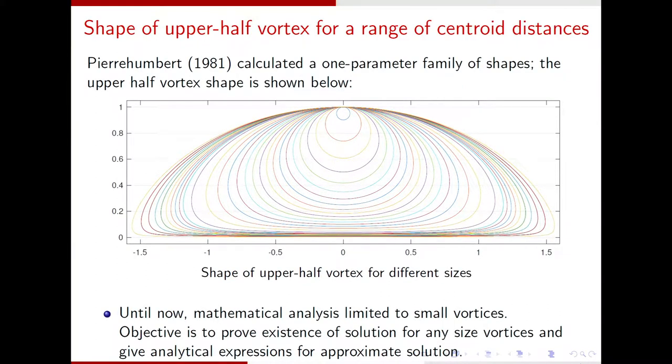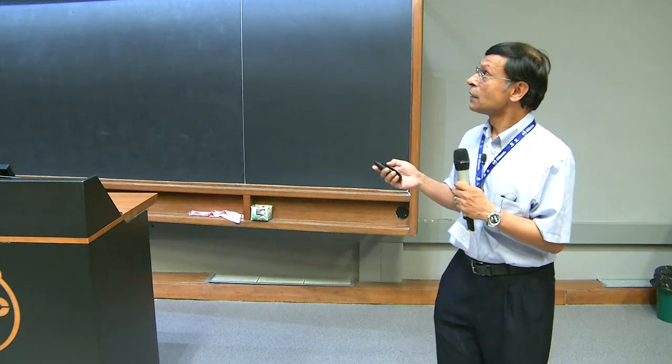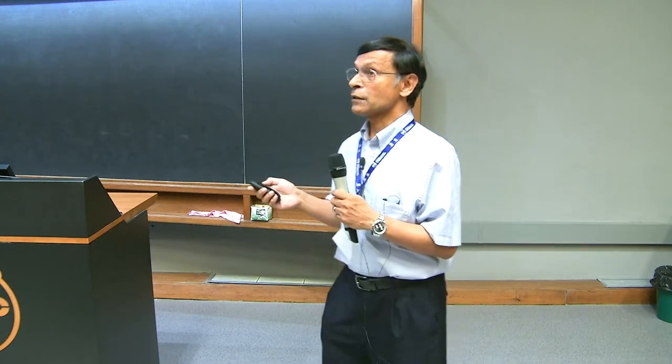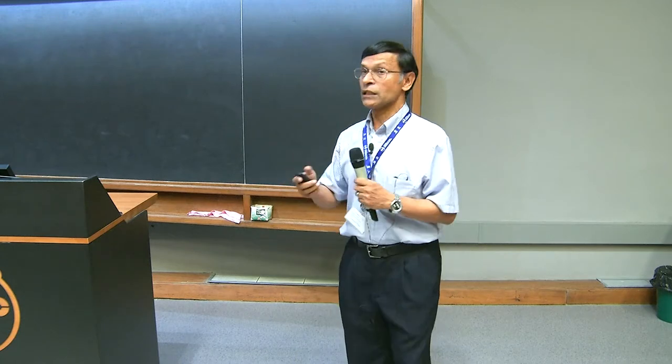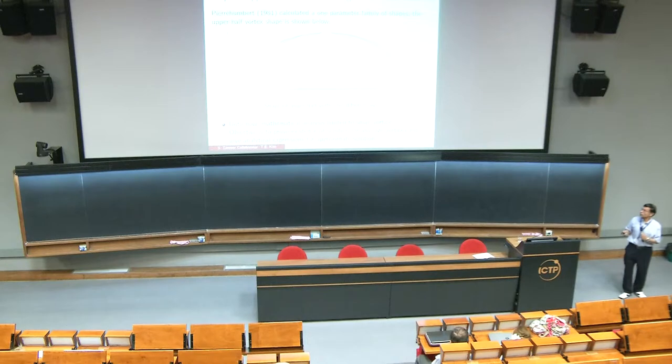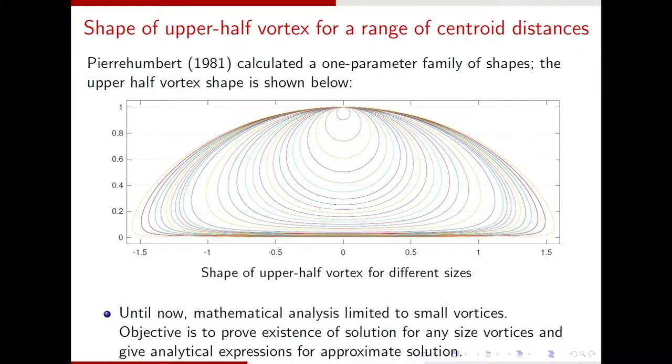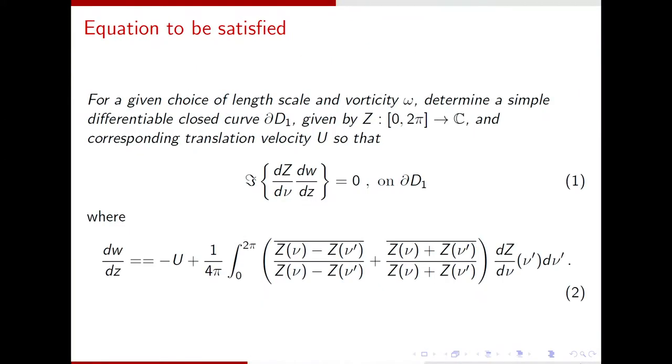So, Pierre Humbert actually numerically calculated these shapes, and there is a one-parameter family of solutions, and I'm showing the shape of the upper half vortex. And the one parameter that's changing is actually the centroid distance between the two vortices. And until now, mathematical analysis has only been done, as far as we know, for small vortex size. But the question is, how do you actually prove the existence of this solution? And the method we use, as you'll see, is quite general, not just for this problem. And that's part of the reason I decided to choose this material for the talk.